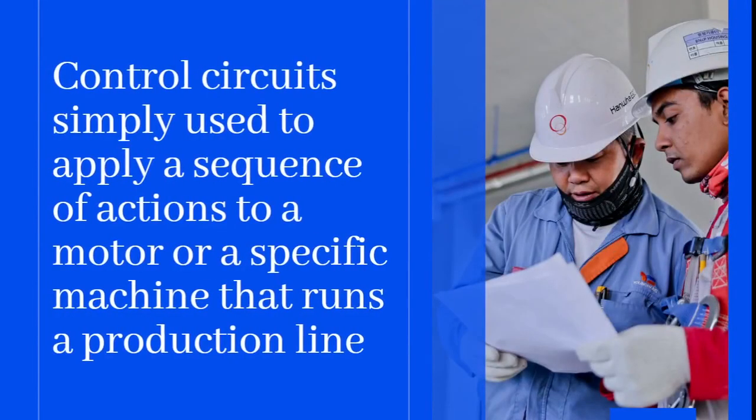Control circuits are simply used to apply a sequence of actions to a motor or a specific machine that runs a production line. That means that control circuits are electrical circuits that we design and connect to control machines or motors that run production lines.